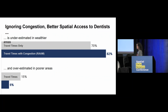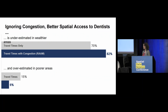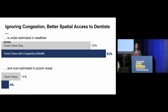If you quantify the better spatial access to dentists in wealthier and poorer areas, you find the same thing the maps already indicated: looking at travel times only, the better spatial access to dentists is underestimated in wealthier areas — 70% compared to 82% — and overestimated in poorer areas by the travel time model. In other words, if you ignore potential overcrowding, the travel time model will say that poorer areas have better spatial access to dentists than they actually do.